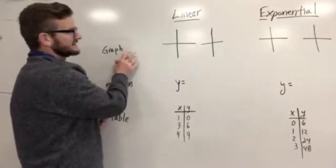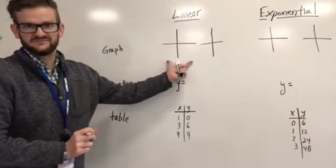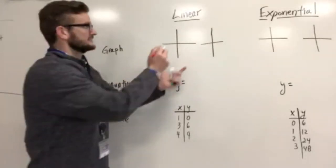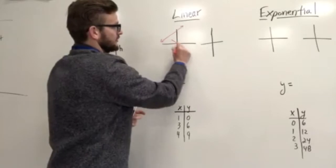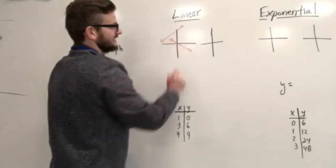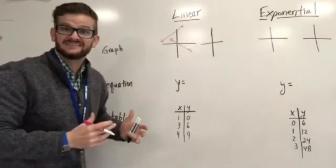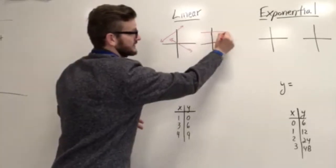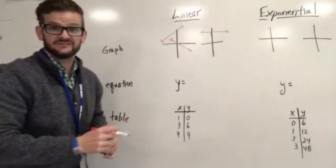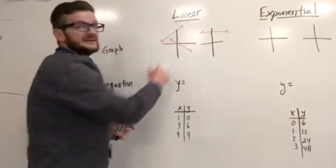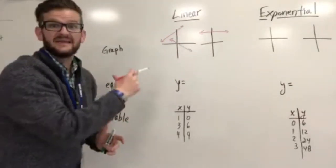If we're looking at the graph of a linear function, this linear function is going to create a line or something that has a constant rate of change. It might also be like this. All of these are linear functions. If we found the slope or the rate of change between each of them, it's going to be constant.